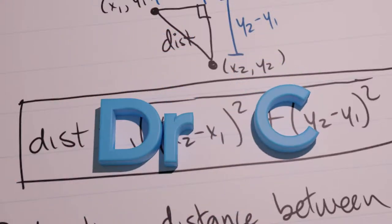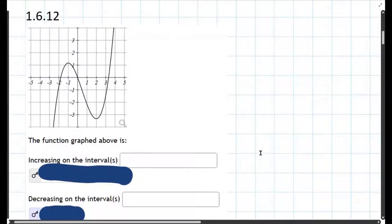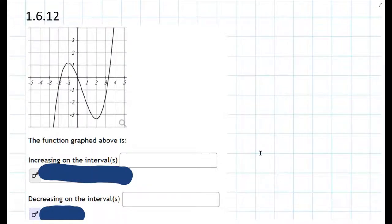We're going to solve 1.6.12 and this function is graphed here. We want to write the interval of increase and decrease, and there may be more than one interval.